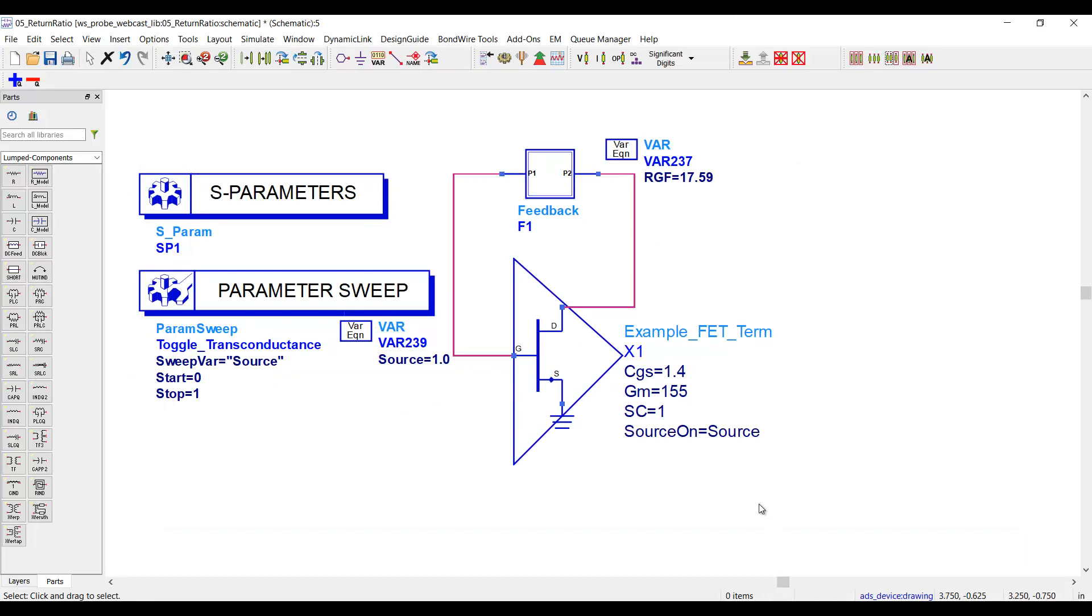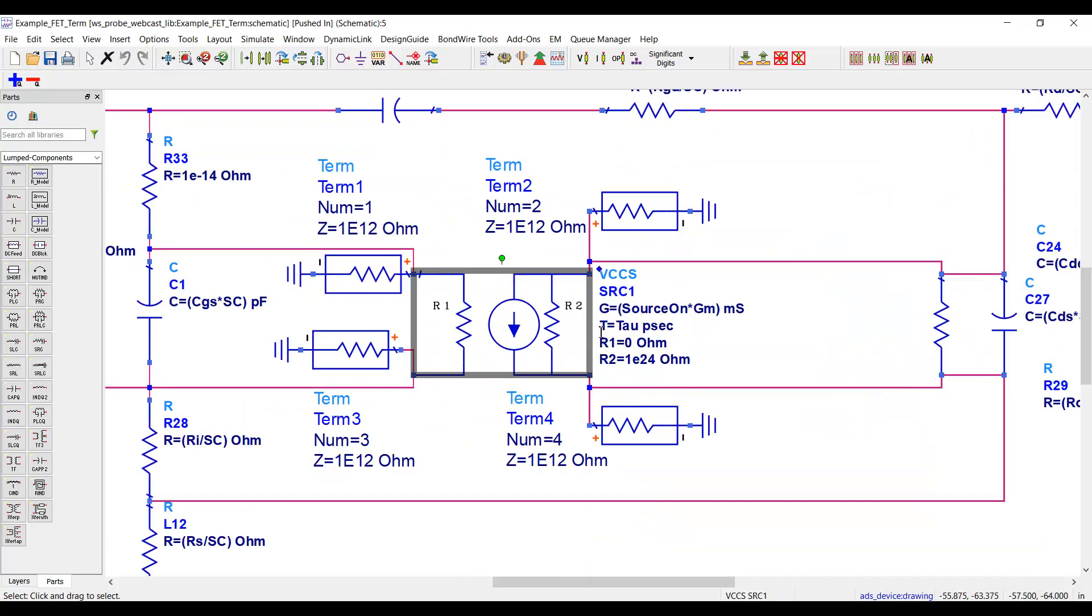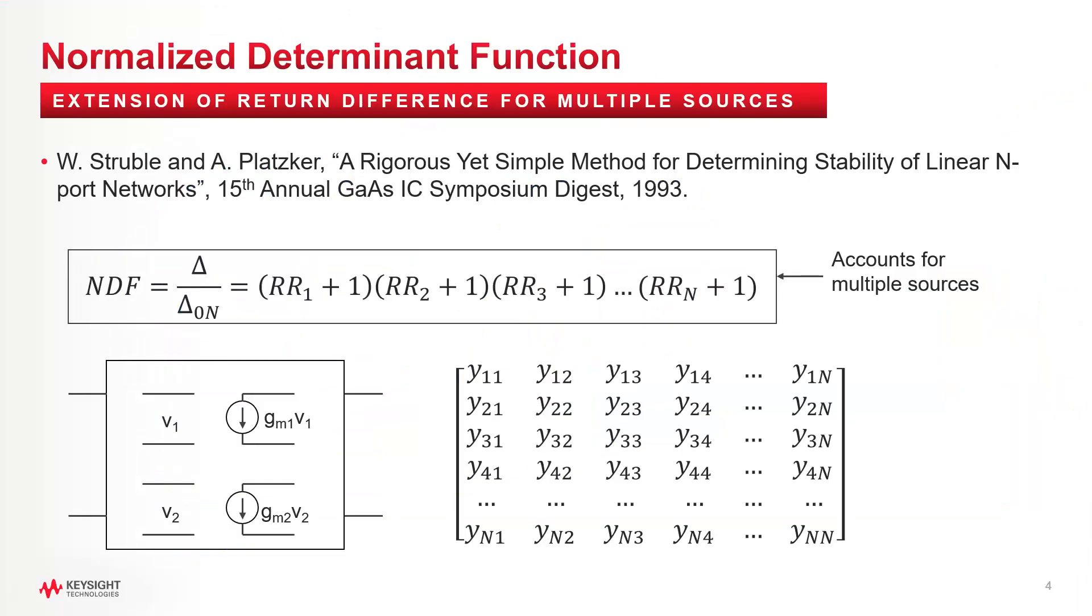I showed last time that to compute return ratio with a simple amplifier and feedback network, I had to actually go inside of the transistor and turn off the active gain element. That's fine, but most circuits today have more than one transistor and lots of active elements, so what does it take to analyze those types of circuits? Fortunately, two engineers from Raytheon, Wayne Struble and Arya Plattsker, showed how Bode's original return ratio technique could be extended to a network with an arbitrary number of active sources using a normalized determinant function of the admittance matrix. I put the reference on the slide so you can check it out. It's definitely a very important concept in terms of stability.